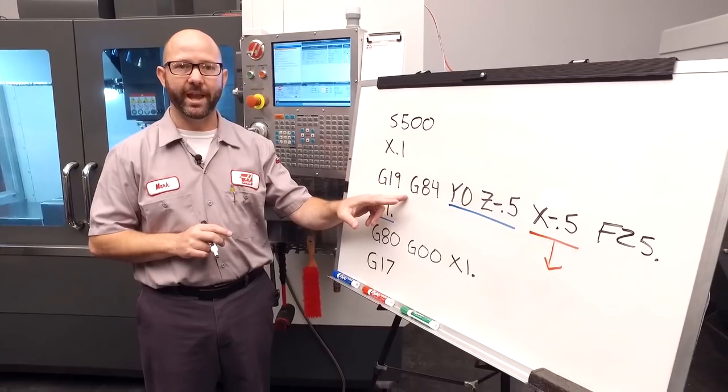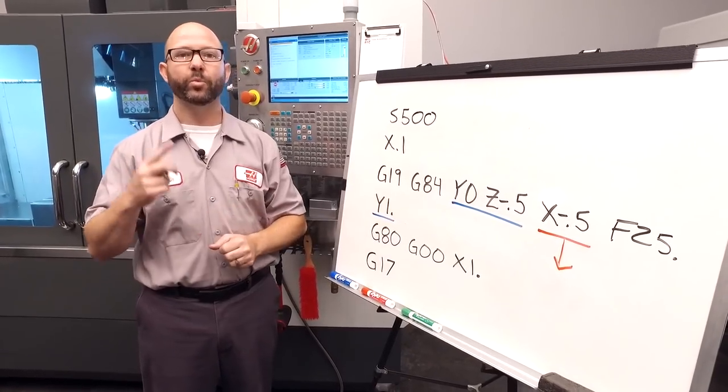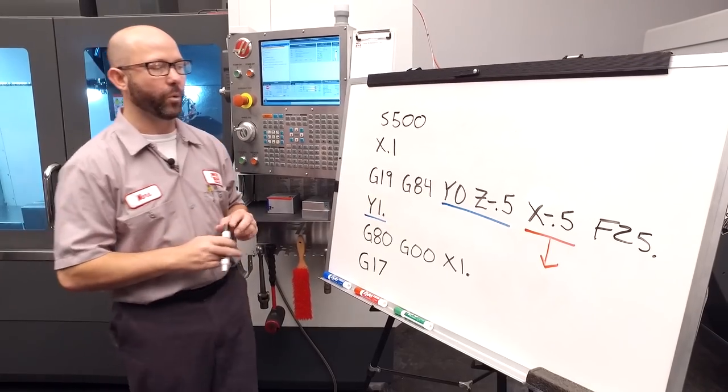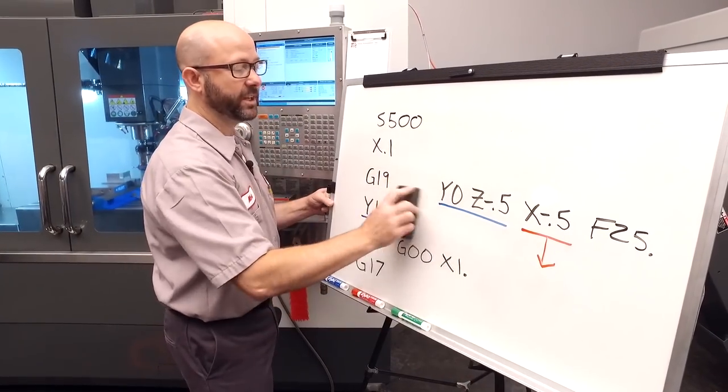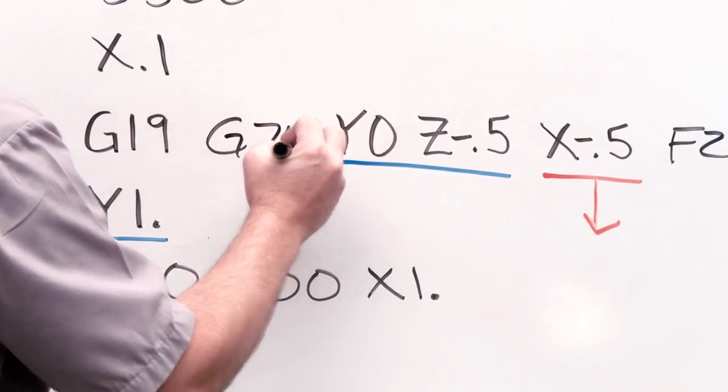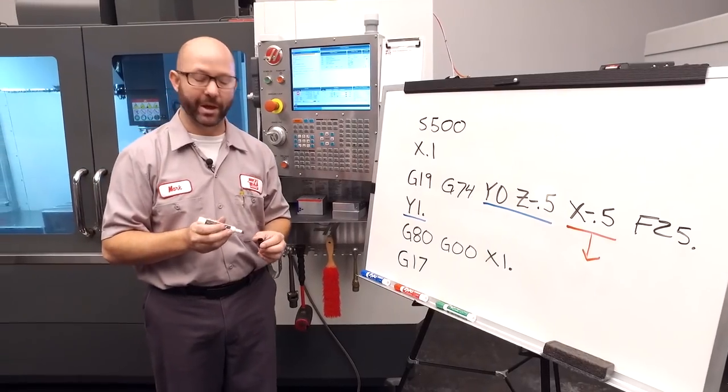Our right-angled head reverses the direction of my spindle, so I can't use a G84. We should be using a G74. Okay, that looks better. Let's go ahead and run this program and see how it does.